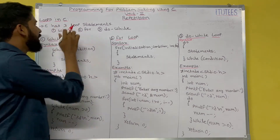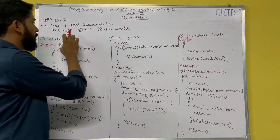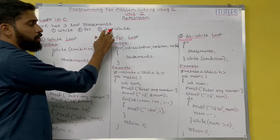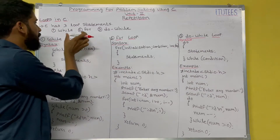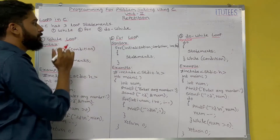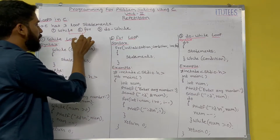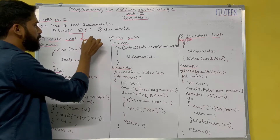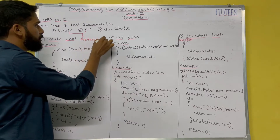C has three loop statements: while, for, and do-while. While and for are the pretest loops.